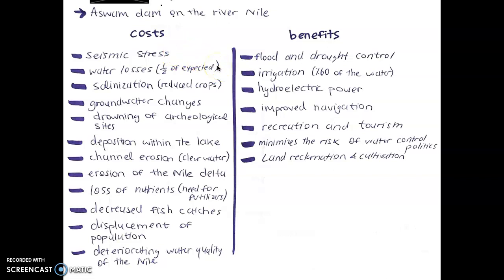Water losses — in the case of the Aswan Dam, it provides only half of the water that was expected. So it's not really a water loss, but more of a less effective water provider. Then there is salinization — the saltiness of the water. When the water becomes more salty, that's not great for agriculture, so the crops are reduced.